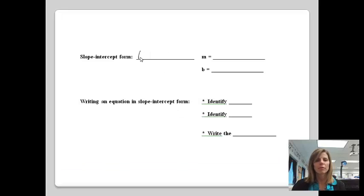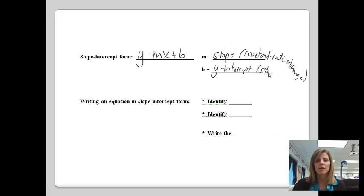Slope-intercept form, hopefully you remember, is just y equals mx plus b. The m stands for the slope, or the constant rate of change. So what is the problem going up by or down by? And b is the y-intercept. Where does the problem start? When you're writing an equation in slope-intercept form, you just need to identify the m and identify the b, and then write the equation. This is the most straightforward type.